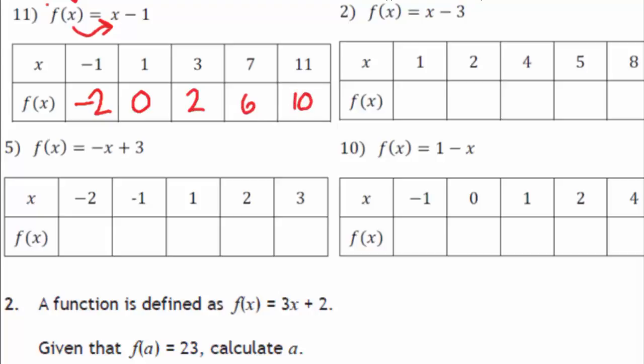So 1 minus 3, that's minus 2. That one, 2 minus 3 is minus 1. 4 minus 3 is 1, that's 2. And that's 5.